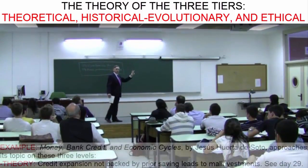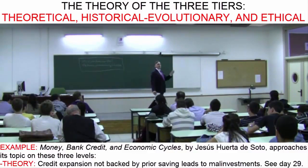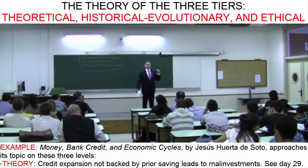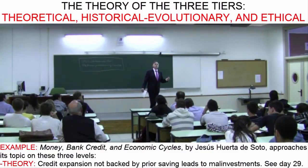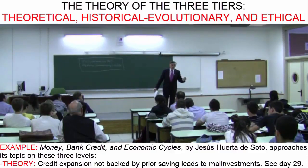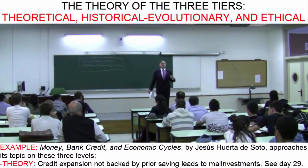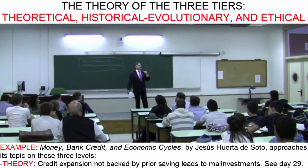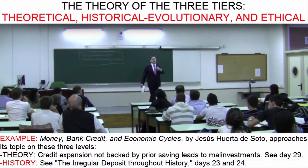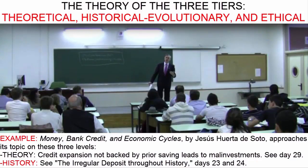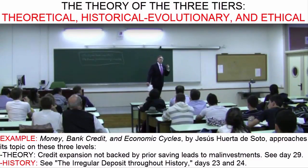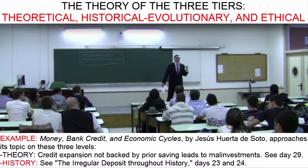Money, Bank Credit and Economic Cycles contains economic theory which explains that the manipulation of money, the reduction of interest rates, and fractional reserve banking orchestrated by central banks lead to investment errors on a massive scale. The market sooner or later discovers these errors and reverses them in the form of a financial crisis followed by a profound economic recession. That is the theory. However, I also devote a large part of the book to history — two or three chapters. Historically, the review of historical events confirms what theory tells us in abstract terms.